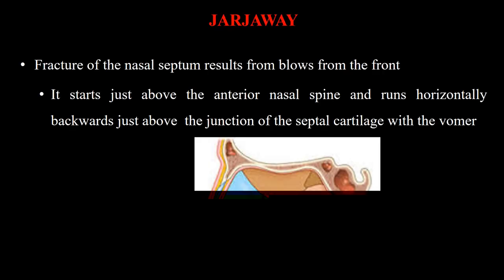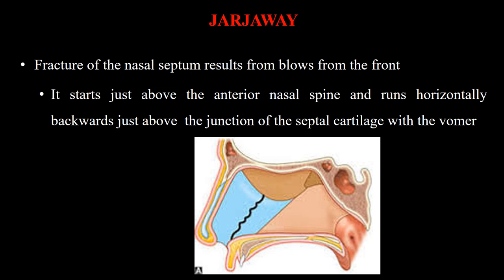There are two types of septal fractures: Jarjave and Chevalet. The Jarjave fracture usually occurs from blows to the front of the nose. The fracture line starts just above the anterior nasal spine and runs horizontally backwards, just above the junction of the septal cartilage with the vomer — i.e., along the septal-vomerian junction.